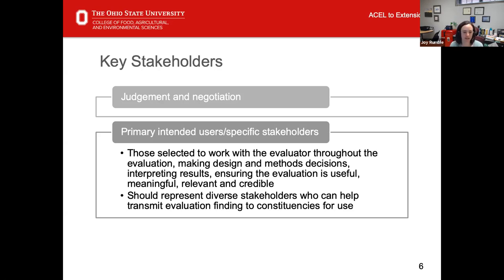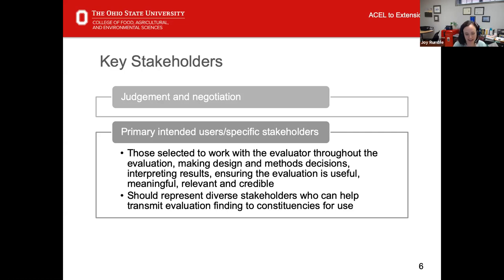When we talk about primary specific stakeholders, we're talking about those who are selected to work with the evaluator throughout the evaluation. A lot of times we just think of stakeholders as those we're going to give the results to. But really stakeholders can be much more involved — they can help with the design and methods of your evaluation, help to interpret results, be engaged in disseminating that evaluation information, ensure credibility is built, and help alleviate some of the work. We want to select a diverse group of stakeholders so that they can help us transmit those findings to a diverse group of constituencies.